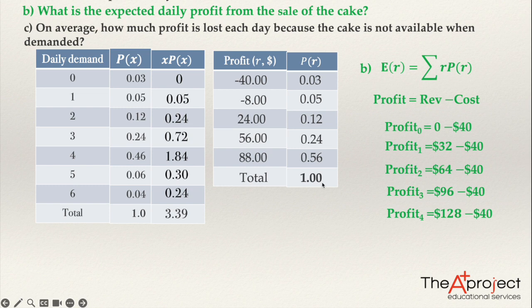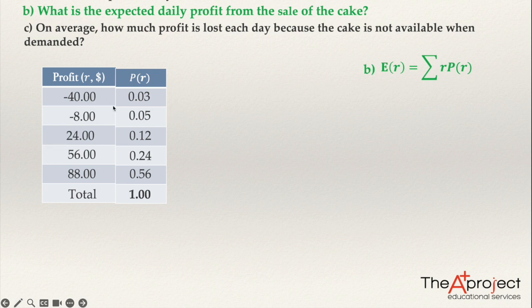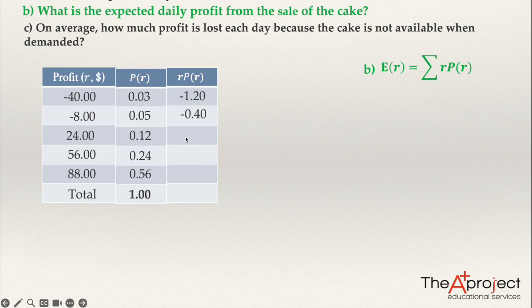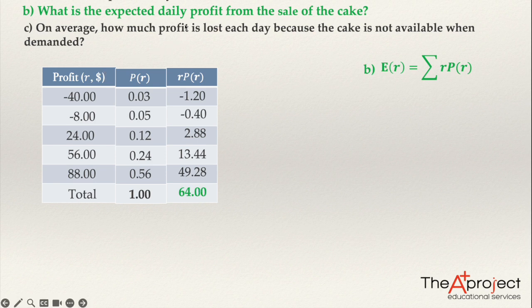This is the probability distribution of the profit. Now let's multiply profit times probability: negative $40 times 0.03 = negative $1.20; negative $8 times 0.05 = negative $0.40; $24 times 0.12 = $2.88; $56 times 0.24 = $13.44; and $88 times 0.56 = $49.28. Adding all these together gives $64. So $64 is the expected daily profit — on average, the bakery earns $64 per day from selling these cakes. Sometimes less, sometimes more, but on average $64.